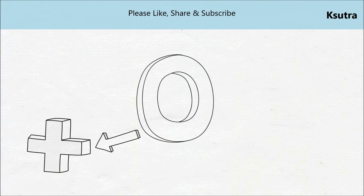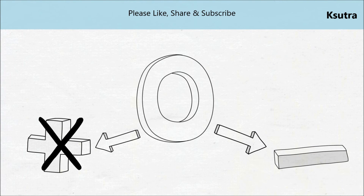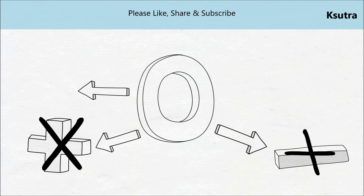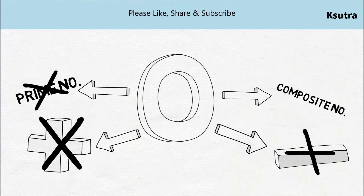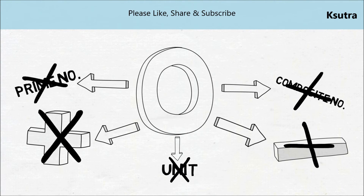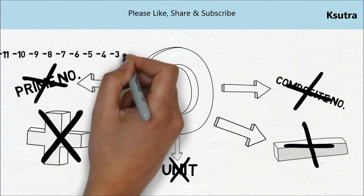Zero is neither positive nor negative, neither a prime number nor a composite number, nor is it a unit. It represents the boundary between the negative and the positive numbers.